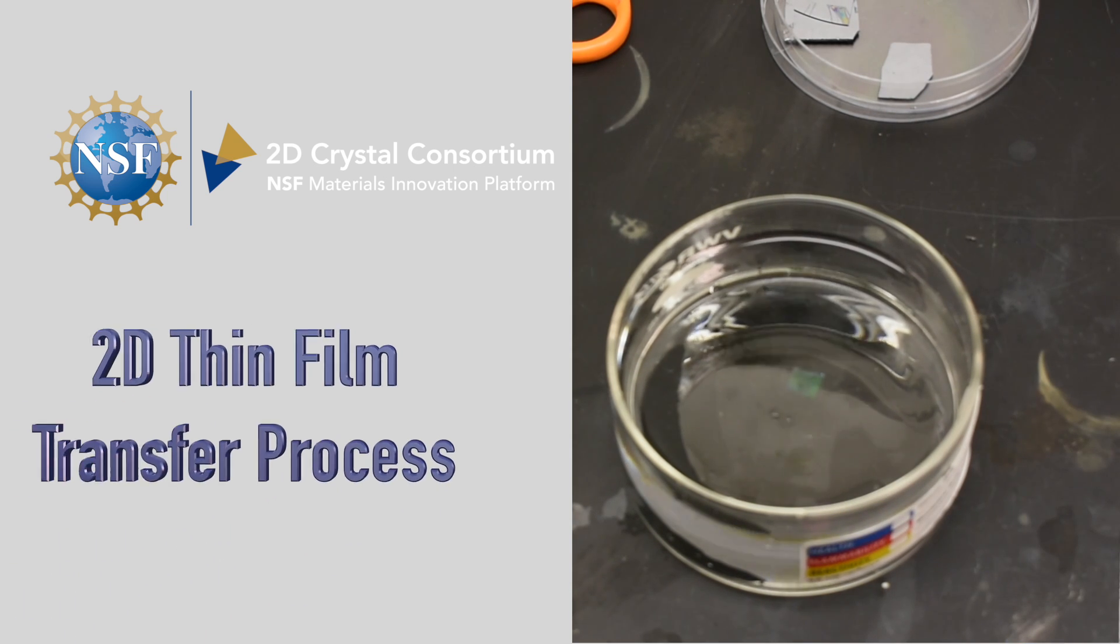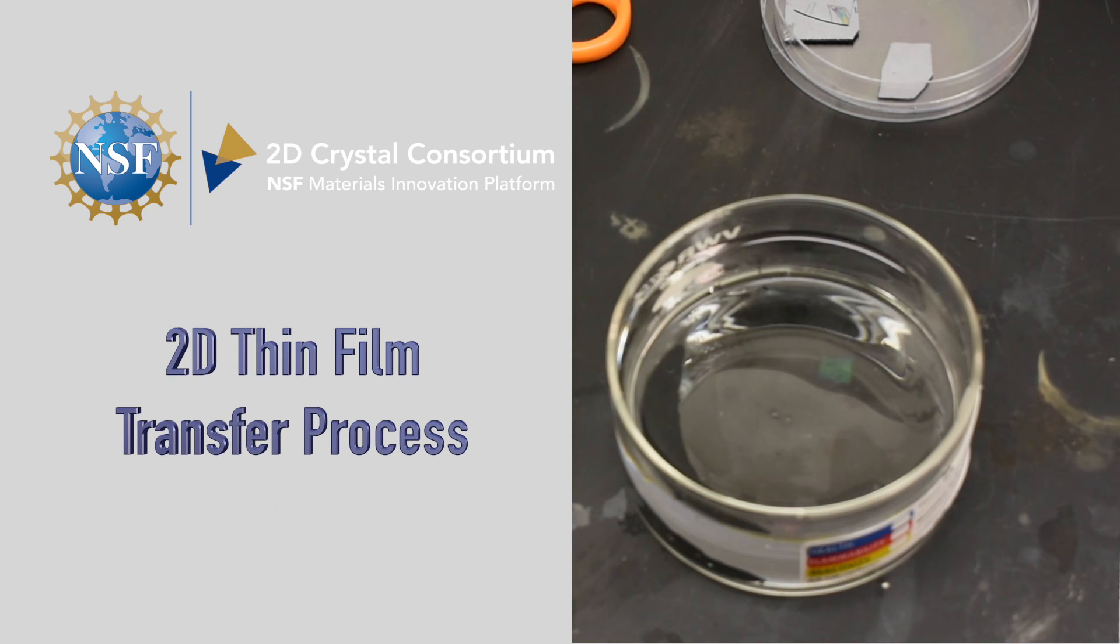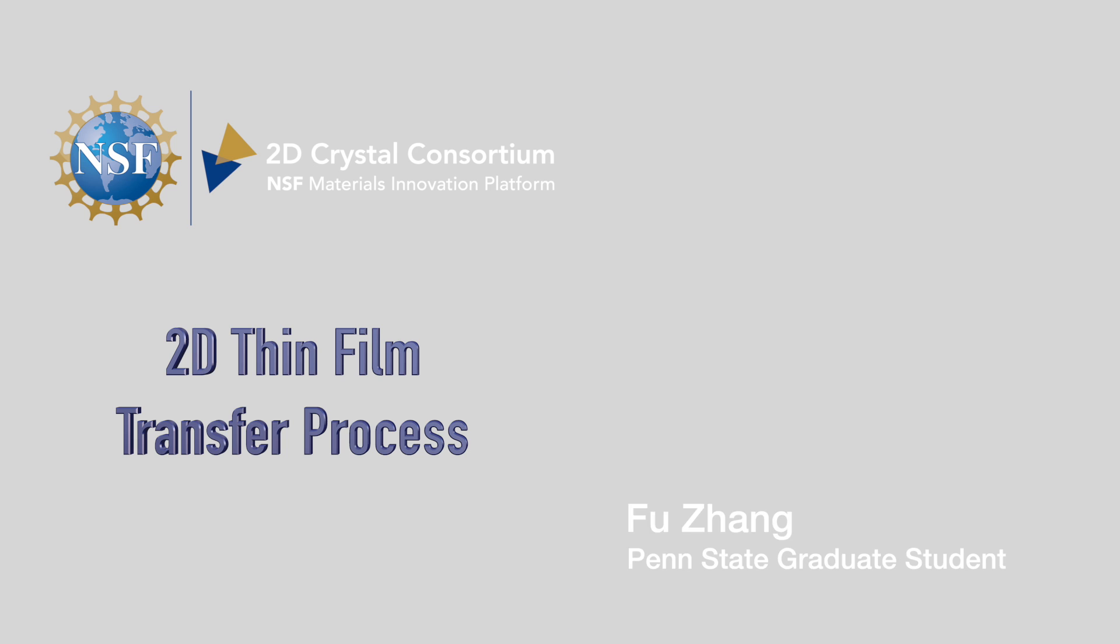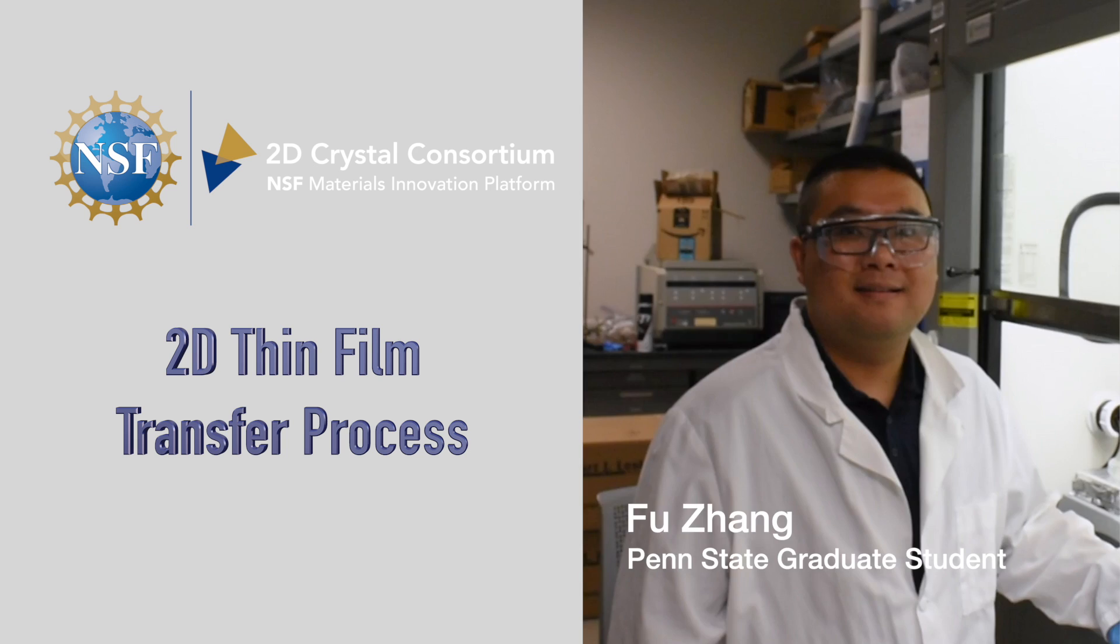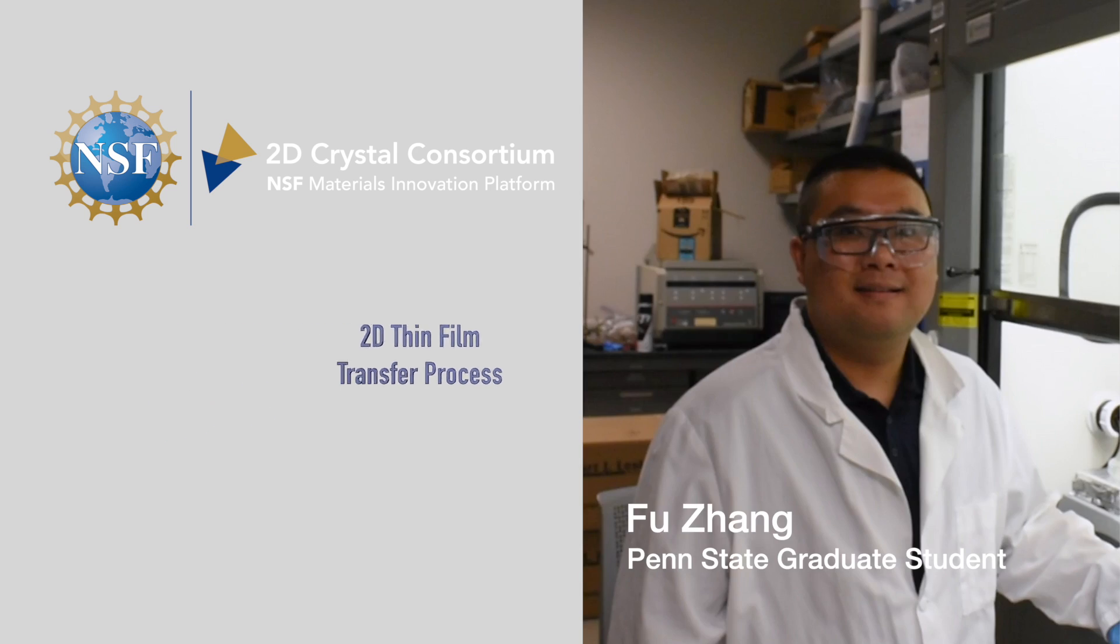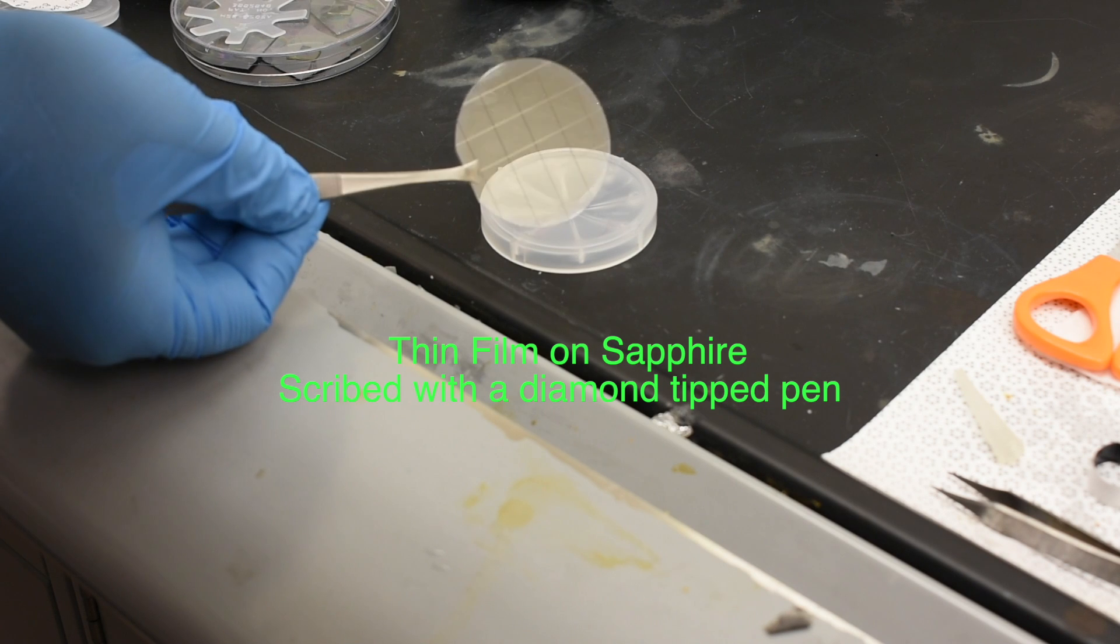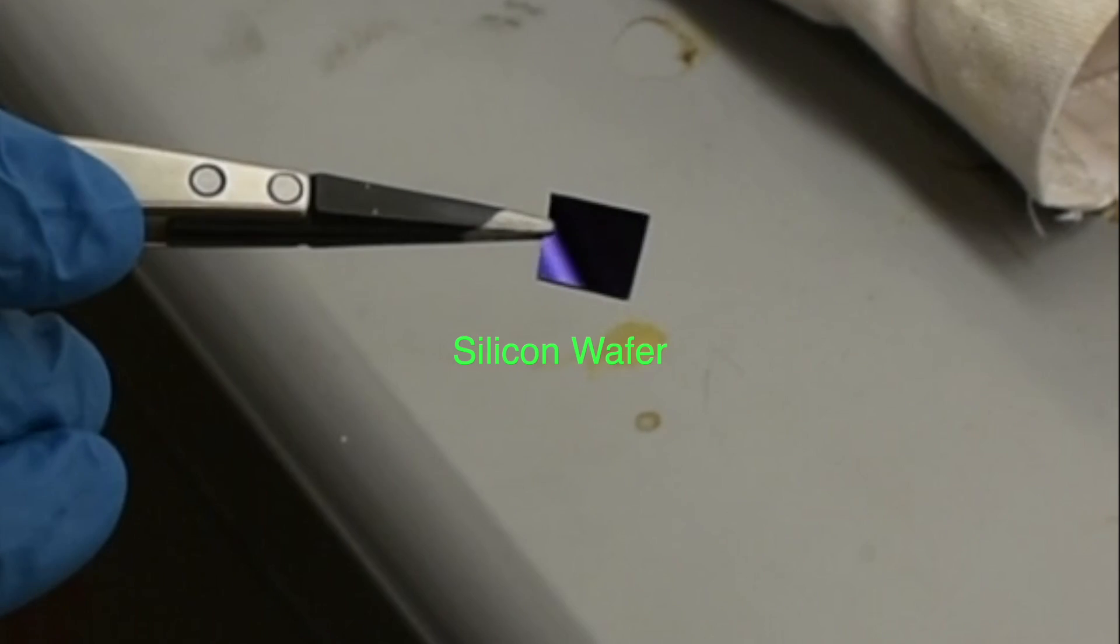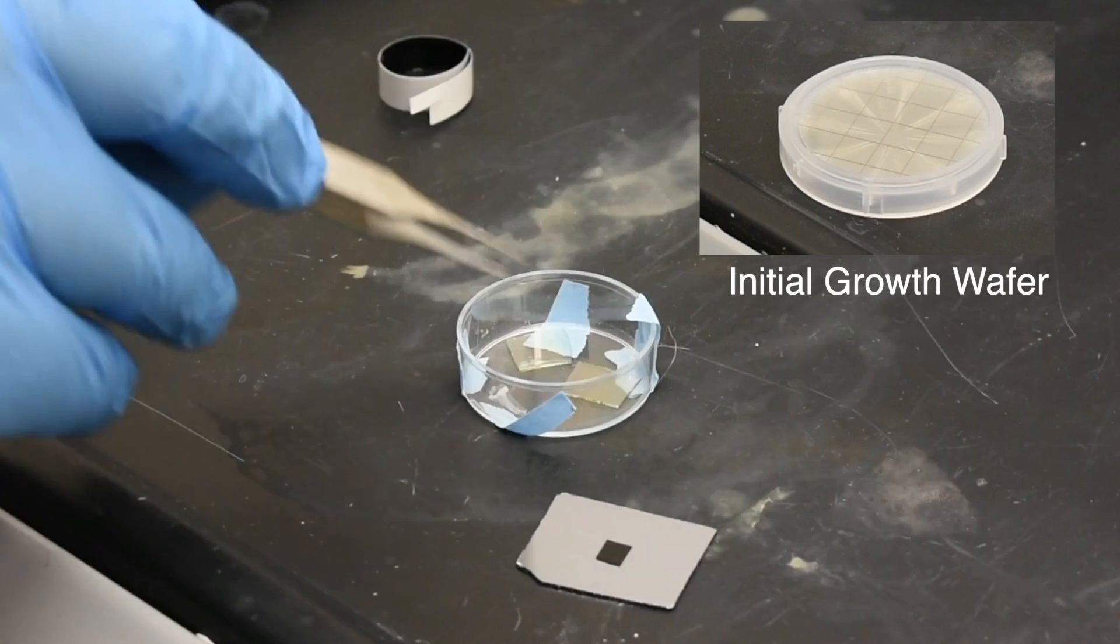In this 2D Crystal Consortium video, Penn State graduate student Fu Zhang demonstrates his procedure, published in 2018 in the journal Nanotechnology, for how he transfers 2D layered thin films from his initial growth substrate to a different final substrate.